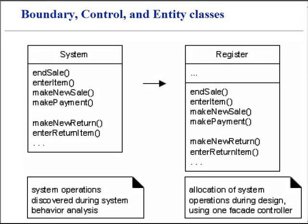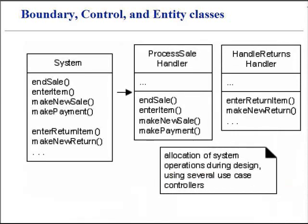Discovery of system operations during system behavior analysis involves a search for boundary, control, and entity classes. Allocation of operations often suggests adding such concepts as boundary, control, and entity as application classes to the system. System operations should be handled in the application logic, otherwise known as the domain layer.